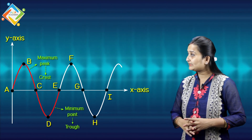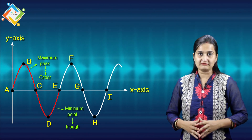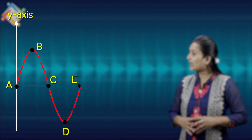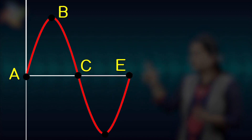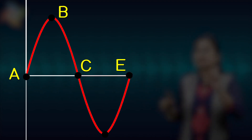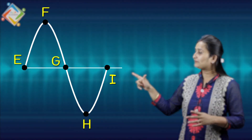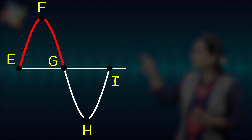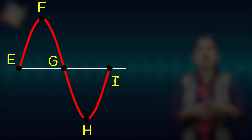This waveform contains two different waves. The first wave starts from point A and goes all the way and ends at point E — so A to E is called one wave. Similarly, the second wave starts at point E and ends at point I — that is called the second wave.